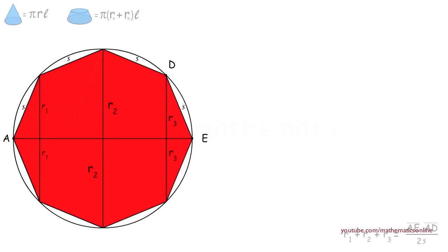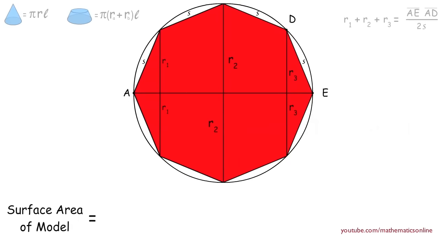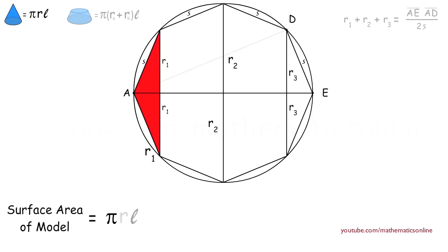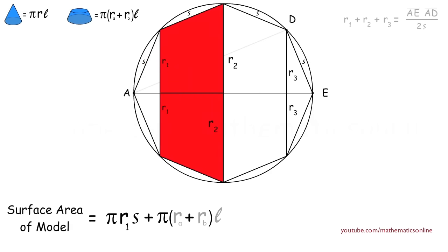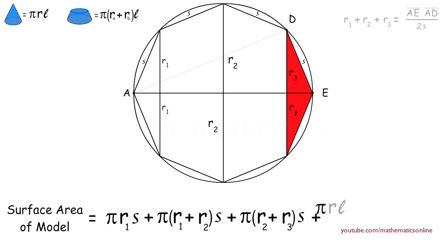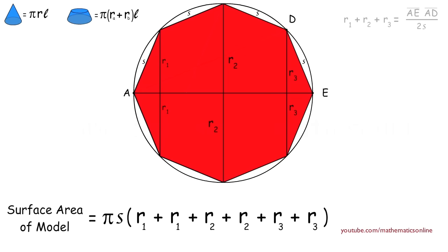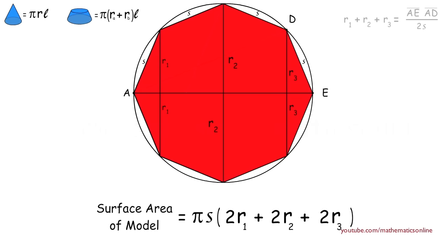We can now begin to find the surface area of the model by finding the surface area of the cones and frustrums without their bases. The surface area of the model equals the surface area of the first cone, which is π·R1·S, plus the surface area of the first frustrum, which is π·(R1 + R2)·S, plus the surface area of the second cone, which is π·R3·S. Using algebra, we factor out π and S, combine like terms, and factor out the 2s. Therefore, the surface area of the model is equal to 2πS times (R1 + R2 + R3).